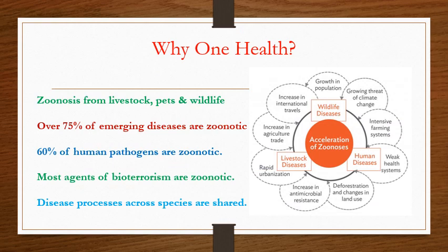Why animal health? It is mainly due to zoonosis. Zoonosis is the transmission of disease from animals to humans and the other way — from livestock, from pet animals and wildlife. Over 75% of emerging diseases are zoonotic. 60% of human pathogens are zoonotic. Most agents of bioterrorism are also zoonotic. Mostly the disease processes across species are also shared, as you can see in the diagram.